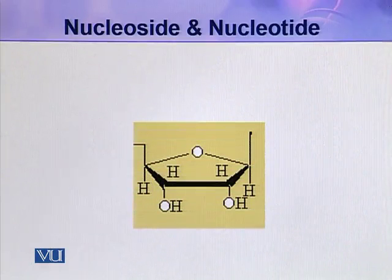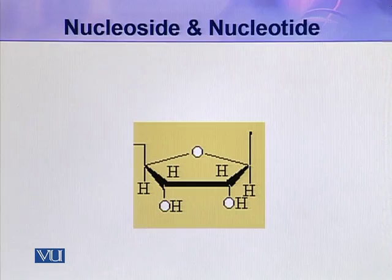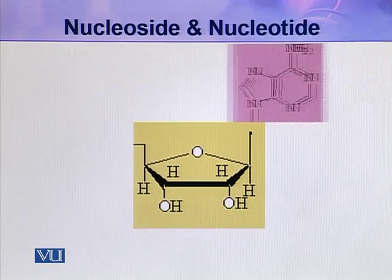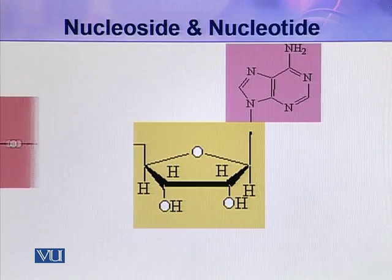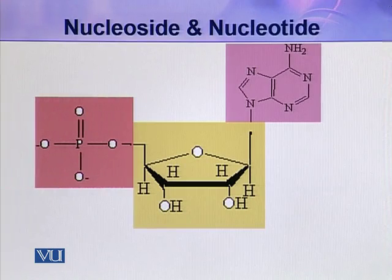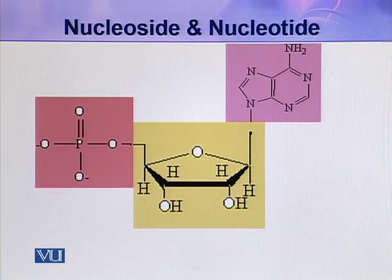In this picture you can see a pentose sugar in its furanose configuration. When a nitrogenous base is attached to this pentose, it becomes a nucleoside, and if a phosphate group is then attached to this nucleoside, it becomes a nucleotide. So this molecule is a nucleotide with all three components.